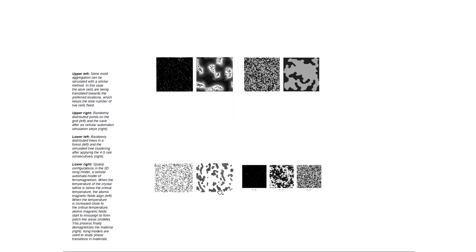Going down in scale, there are so-called Ising models for ferromagnetism — how material gets magnetized or demagnetized. This can be explained by crystal lattices where atoms have different orientations. Sometimes you get alignment and a magnetic material, sometimes misalignment and a demagnetized material. Phase transitions of materials can be explained using cellular automata.